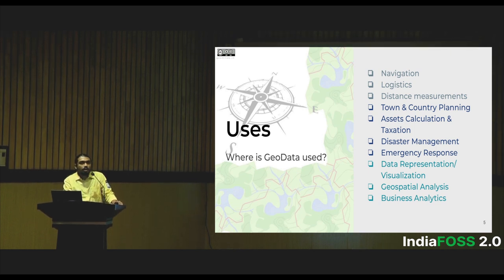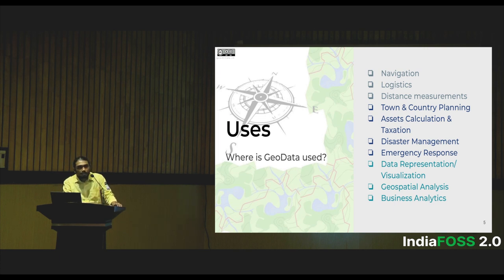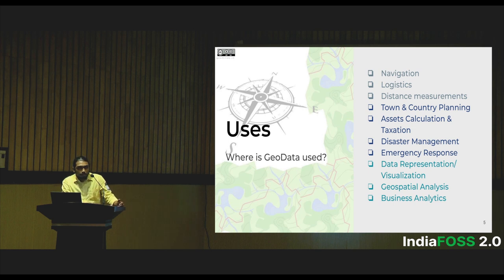How can we effectively respond and get prepared? Then data visualization and representation — nowadays we see a lot of tabular data being transformed into maps. There's also geospatial analysis, which involves finding solutions to problem statements using various techniques. The major booming one in the industry is business analytics — for example, where a warehouse should be planned, where a franchisee should open a showroom, or how Uber and food delivery companies use it very effectively.